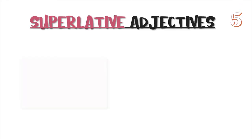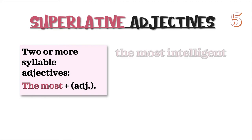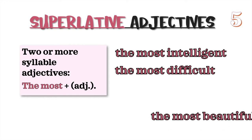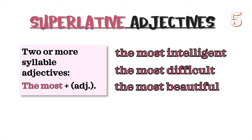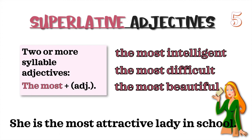Superlative Rule 5: Two or more syllable adjectives. We add the most, plus the adjective. For example: the most intelligent; the most difficult; the most beautiful. Example sentence: She is the most attractive lady in school.